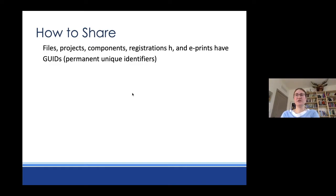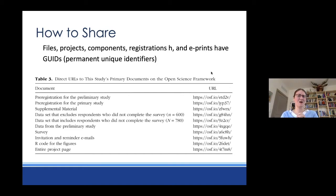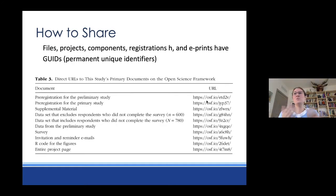Everything on OSF has GUIDs — permanent identifiers — for files, projects, and components. When you've shared information, you want to let people know. If sharing as part of a published work, I really like what EJ Wagenmacher did: he had a table in his paper showing here are all the things I'm sharing, what they are, and the URL to where you can find them on the OSF. It's a way to organize that information within the paper to help people navigate to it more easily, because if you share things, you want people to be able to find them.